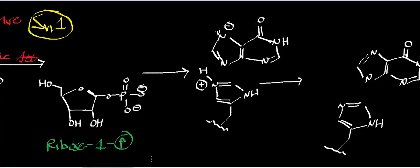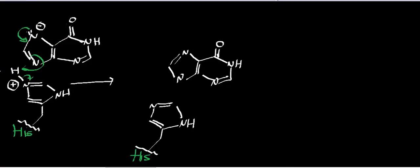We have this hypoxanthine in the deprotonated state, and we have to regenerate the resting state of the enzyme. So this lone pair is going to kick back in, and then these pi electrons are going to be kicked out, and they will re-abstract the proton from the critical histidine residue in the active site. That regenerates histidine in the deprotonated state, whereby we can do another reaction, and that releases hypoxanthine.